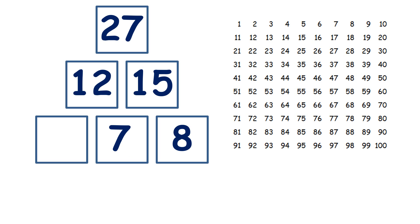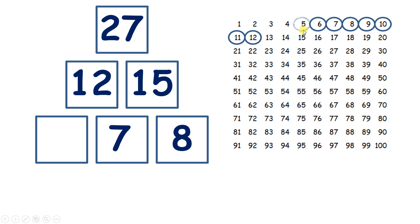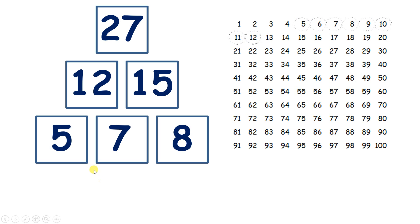And now something plus seven is 12. So if we do 12 minus seven — start on 12 and count back one, two, three, four, five, six, seven — and that gives us five.